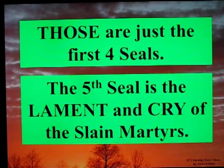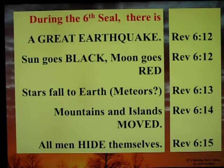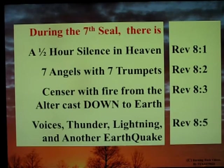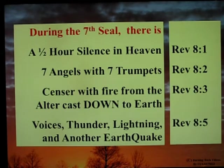The fifth seal is the lament and cry of the slain martyrs. During the sixth seal there is a great earthquake, the sun goes black and the moon goes red, stars fall to earth, mountains and islands are moved, and all men hide themselves. During the seventh seal there is a half hour's silence in heaven, then seven angels with seven trumpets, a censer with fire from the altar is cast down to earth, and there are voices, thunder, lightning, and another earthquake.